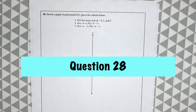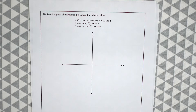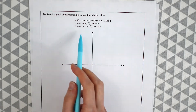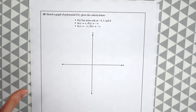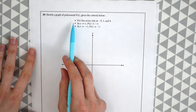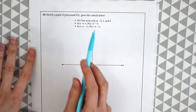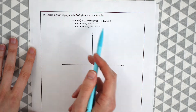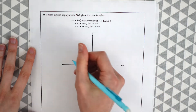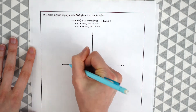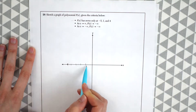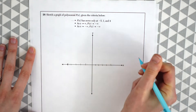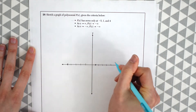Question 28. Sketch a graph of polynomial P of X given the criteria below. We're given that P of X has zeros only at negative 5, 1, and 4, and we're given its end values. Let's focus on the first bullet point: P of X has zeros only at negative 5, 1, and 4. So let's plot those — here's negative 5, here's 1, and here's 4.